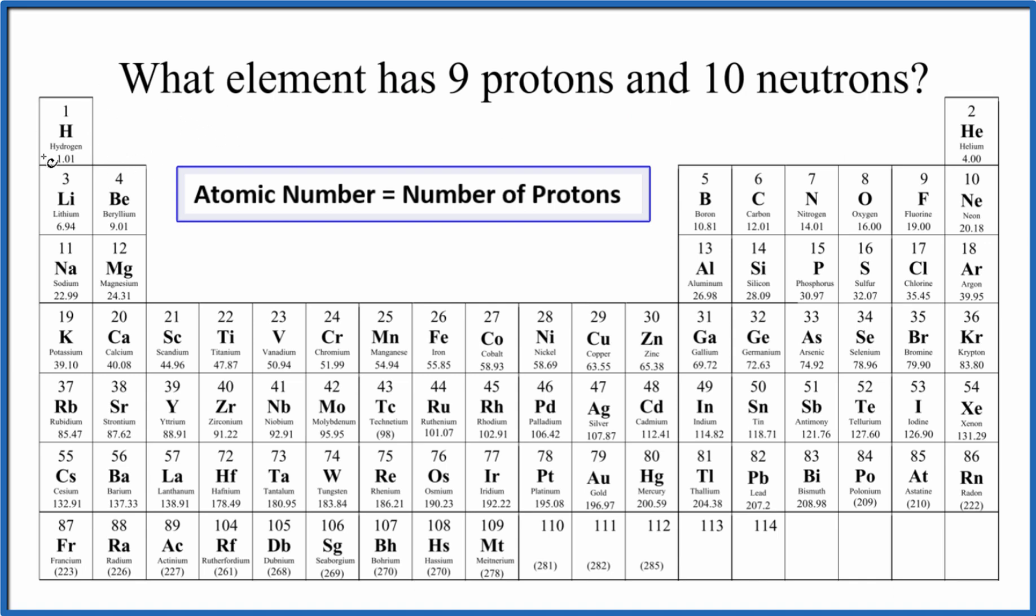The atomic number, that's the number above the element symbol. It's a whole number. And as we go across rows, periods on the periodic table, it increases by one.